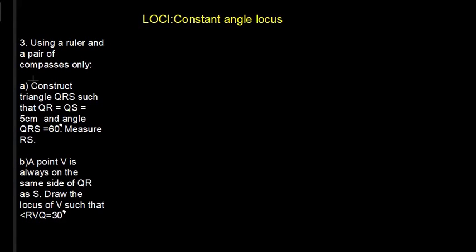So to begin, for part A we are asked to construct triangle QRS such that QR is QS which is 5 cm and the angle QRS is 60. So we begin with a sketch so that we are able to get the outlook and then from there we'll be able to construct accurately. So we have line QR right there.